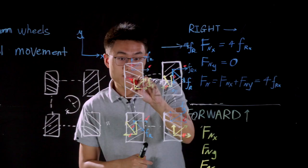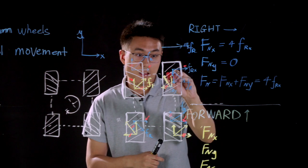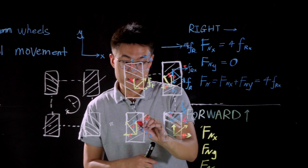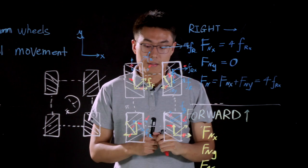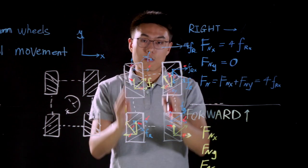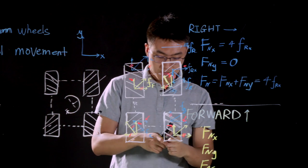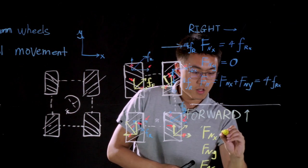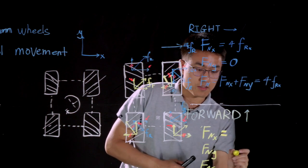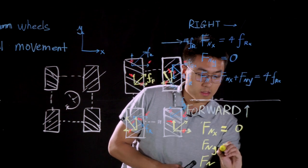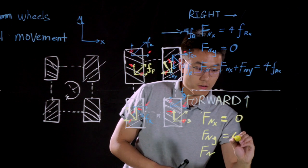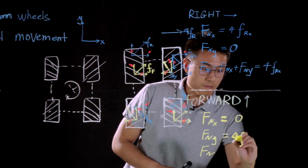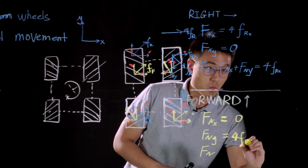And for the component forces on Y direction, you can see that they have same magnitude and same direction because they are all pointing forward. So the net force on X axis is 0 and the net force on Y axis is 4FF,Y.